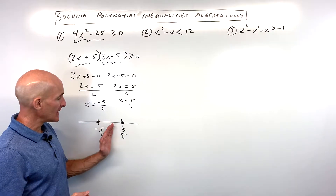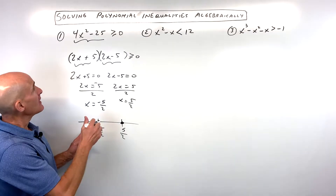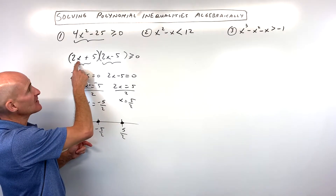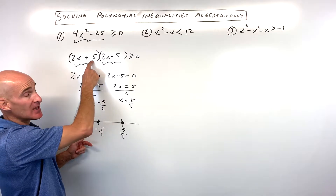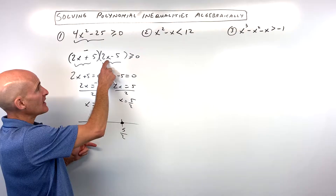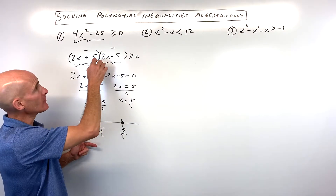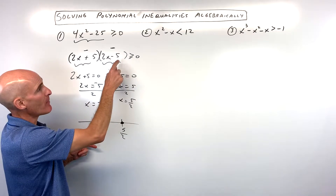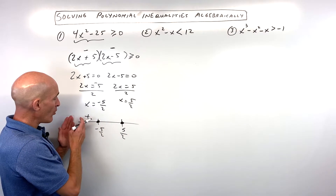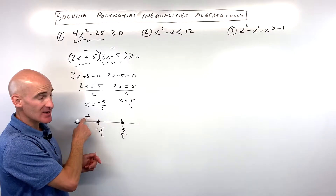What you do is pick a point in each of these intervals. For example, maybe negative 3 over here. If I put negative 3 in for x, I get negative 6 plus 5 is negative 1 — I'll just call that negative. Negative 3 times 2 is negative 6 minus 5 is negative 11 — that's also negative. A negative times a negative is a positive, so I'll put a plus sign there. Any point in this interval, all the way to negative infinity, is going to be positive.